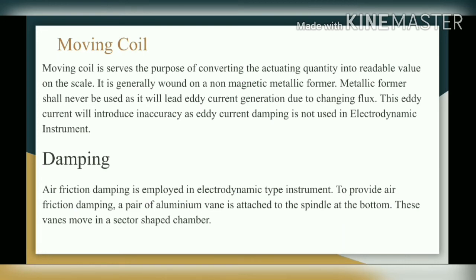Next is damping. Air friction damping is employed in the electrodynamic type instrument. To provide air friction damping, a pair of aluminium vanes is attached to the spindle at the bottom, and these vanes move in a sector-shaped chamber. So for damping purpose, air friction damping method is used.